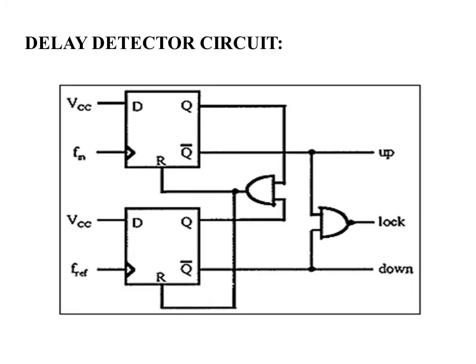This particular delay detector circuit has two inputs, F_in and F_reference. VCC will always be one. From the delay detector circuit, we can see that we obtain three outputs: up, lock, and down. Any of these outputs can be taken to the second block of the PLL. I have taken the up output as the input to the second block.